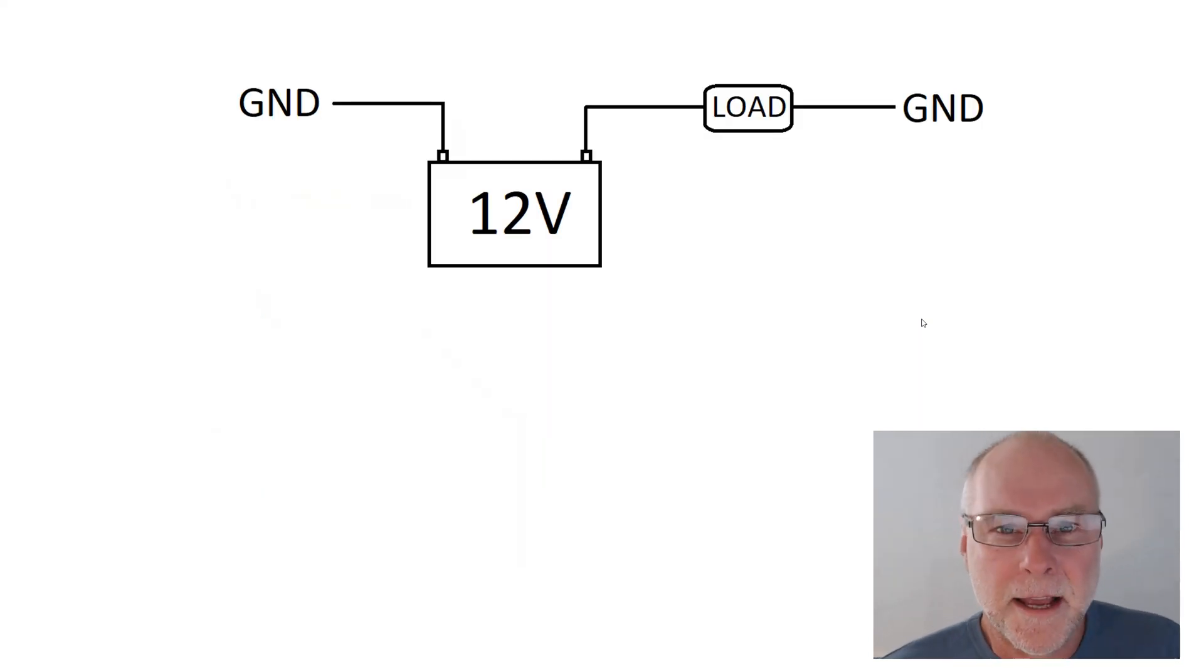We're going to start off with a basic car circuit. So we've got a 12-volt battery here, and we're going to use 12 volts as our nominal voltage throughout this video. One side of the battery is connected to the ground, connected to the car's bodywork or chassis. That's normally the negative side of the battery. The other side of the battery is connected to a load, usually through a switch or multiple switches, and that load might be fans or lights or the starter motor or whatever. And then the other side of that load is connected to ground as well.